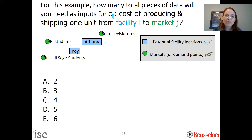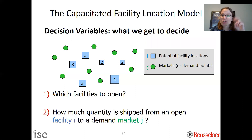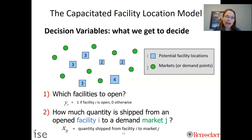This exercise gets you thinking about how changing input collections or sets affects input data. The decision variables in this problem are: Y_i, which equals one if facility I is open and zero otherwise — a binary decision variable — and X_ij, the quantity shipped from facility I to market J, which is the same continuous variable from the demand allocation model.